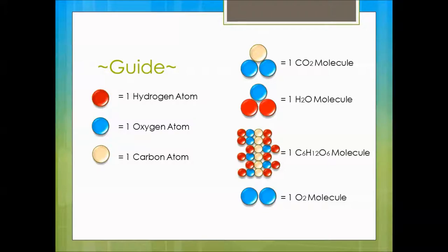The red circle represents one hydrogen atom. The blue circle represents one oxygen atom. The white circle represents one carbon atom.